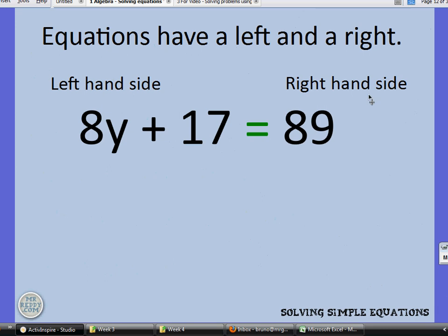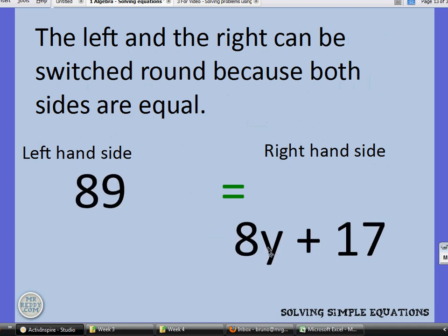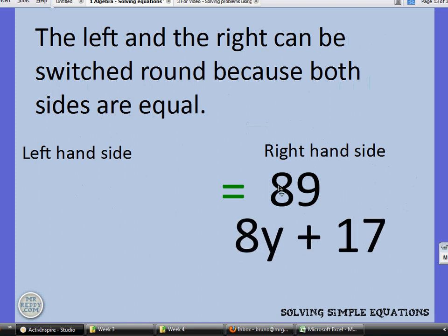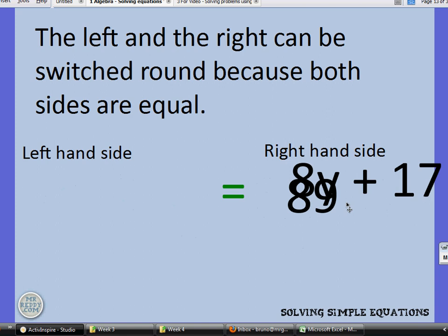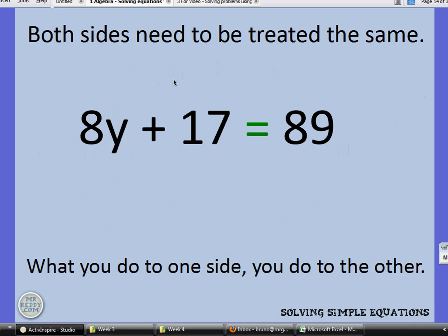I want to tell you three things about equations and then we will start formally solving them with a written method. So equations have a left and a right. It might sound obvious, but I need to make it super clear to you so that we can talk about the left hand side and the right hand side when we need to. The next thing you need to know is that the left hand side and the right hand side can be switched. And that's because they're equal. So I can say that 89 is equal to 8y plus 17, or I can say that 8y plus 17 is equal to 89. And I can happily switch those around to the left and the right and they will still always remain equal. But notice how the whole thing has to switch.